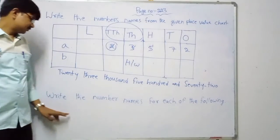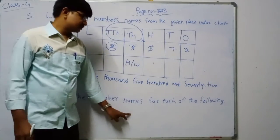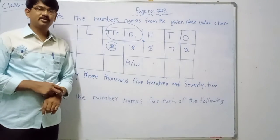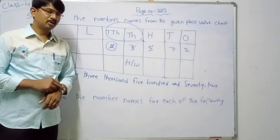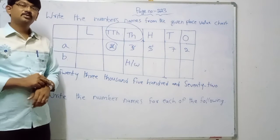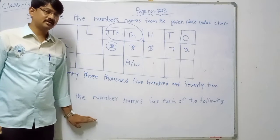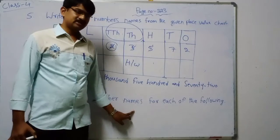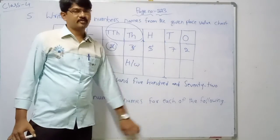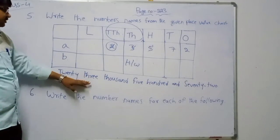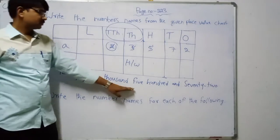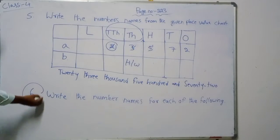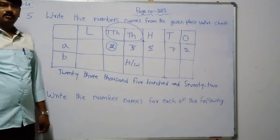Next, sixth problem — write the number names for each of the following. Is it hard for you? No, I feel you can write very easily. The task here is to write the number names for each of the following. We already learnt to write number names. So the sixth question is also your homework.